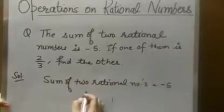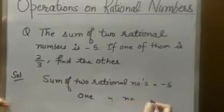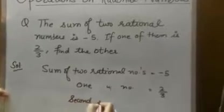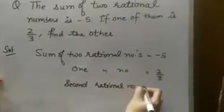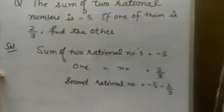Which is given to us? Sum of two rational numbers: minus 5. One rational number: 2 by 3. To find the second rational number, what we will do? We will subtract 2 by 3 from minus 5.